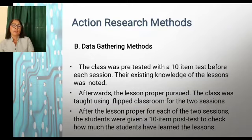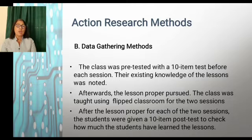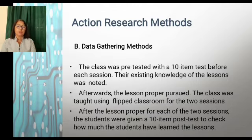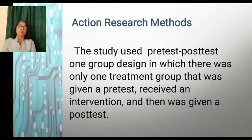For data gathering methods, the class was pre-tested with a 10-item test before each session and the existing knowledge of the lesson was noted. Afterwards, the lesson proper was pursued, and the class was taught using the flipped classroom for two sessions. After the lesson proper for each session, the students were given a 10-item post-test to check how much they had learned. The study used a pre-test/post-test one-group design, in which there was only one treatment group that was given a pre-test, received an intervention, and then was given a post-test.